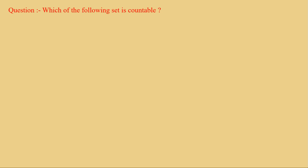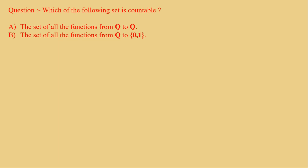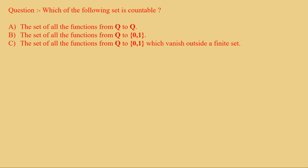The question is: which of the following sets is countable? The options are — Option A: the set of all functions from Q to Q. Option B: the set of all functions from Q to {0,1}. Option C: the set of all functions from Q to {0,1} which vanish outside a finite set. And Option D: the set of all subsets of N.